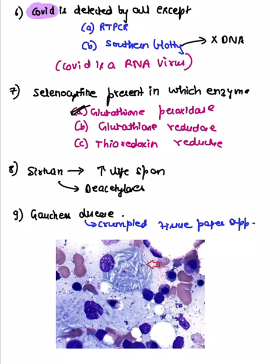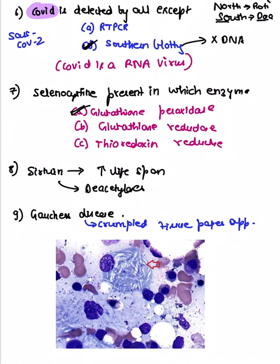COVID is detected by all methods except one — COVID is SARS-CoV-2, an RNA virus. Using the mnemonic: northern blotting detects RNA, southern blotting detects DNA. Since COVID is an RNA virus, southern blotting was the answer as the exception — it detects DNA viruses, not RNA.